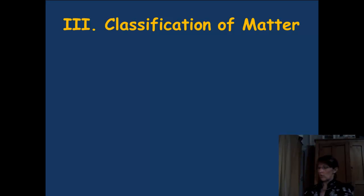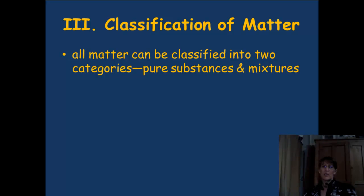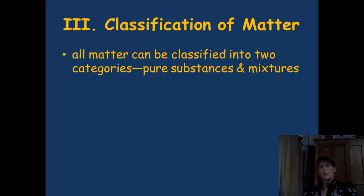If you're looking on your notes, this should be page 3, Roman numeral number 3, Classification of Matter. These are things that you guys already know, so this is just a reminder of the characteristics of matter. All matter around you can be classified into two categories: they're either going to be pure, or it's going to be a mixture. So we have pure substances and we have mixtures.